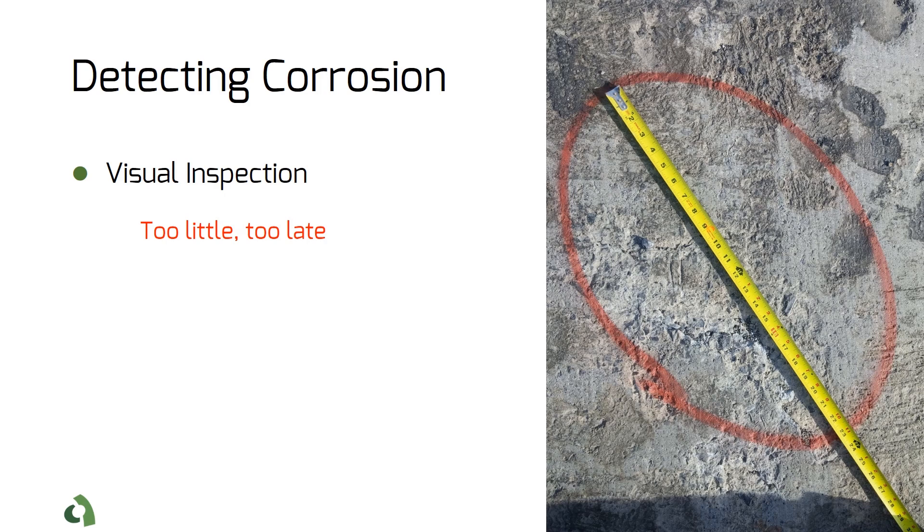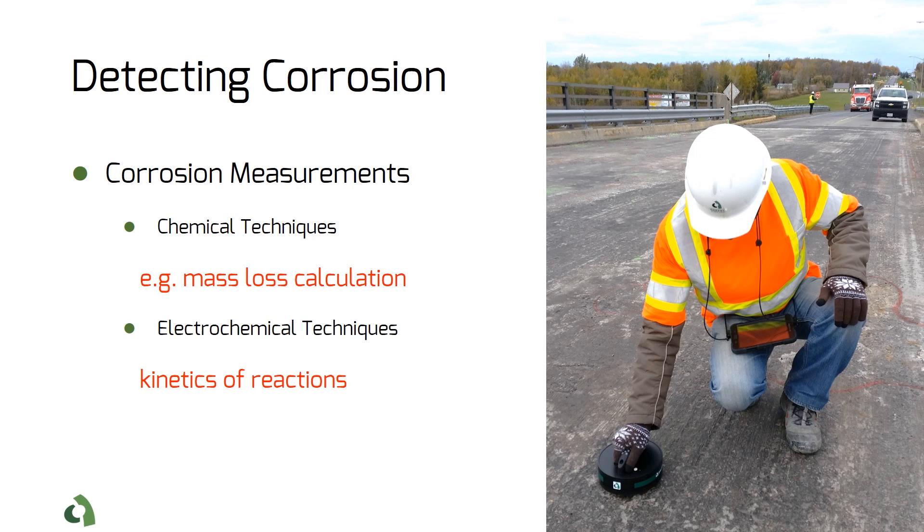Corrosion activity is often quantified by some chemical and or electrochemical technique. These methods can be used to study the kinetics of reactions.